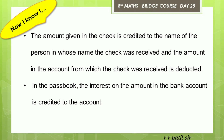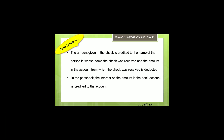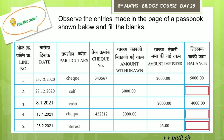The amount given in the cheque is credited to the name of the person. That is, the amount in the account from which the cheque was received is deducted, and the amount is credited to the bank account. Now, let's take an example: observe the entries made in the page of the passbook shown below and fill in the blanks.